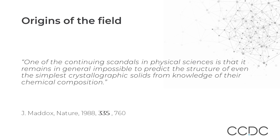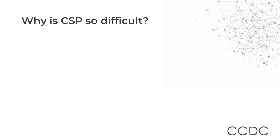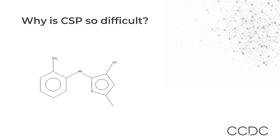Maddox had a point, but we have learnt a lot in the subsequent 32 years. One thing we have learnt is just how hard a problem CSP is. This is best shown using an example. Here is a small molecule. It looks pretty simple — it has just four rotatable bonds and not very many atoms.